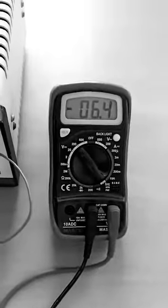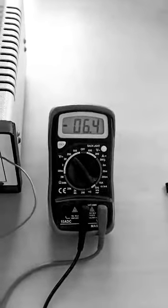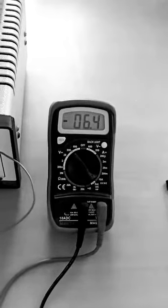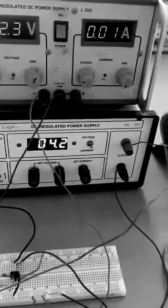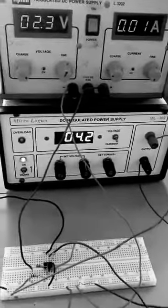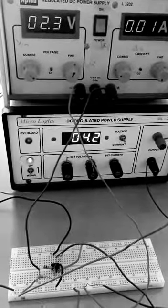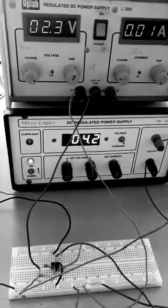Now the output should be nearly equal to 2.3 plus 4.2, around 6.5. When we check for the output, we are getting it as minus 6.4. So our designed circuit is correct, it is working correctly as per our aim. With this we can conclude that the op-amp can be used to add two different voltages. Thank you.